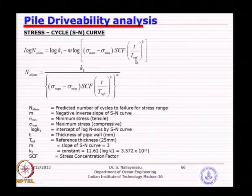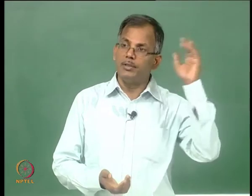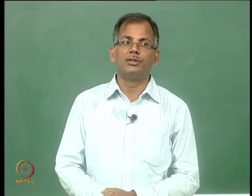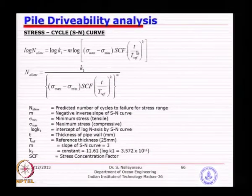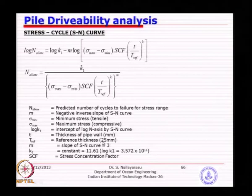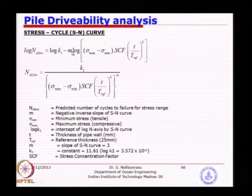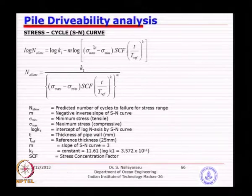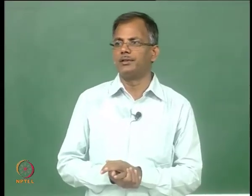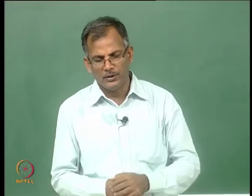The correction factor accounts for variation in thickness between testing done to establish the SN curve and the plate thicknesses used in practice. Normally, the test thickness is about 25 mm, whereas for tubular connections it is 16 mm. The parameter m is the slope of the SN curve, and log K1 is a constant value for different material types, demarcating the change in slope. For tube-to-tube connections, we have a single slope curve, whereas API does not provide this guidance.